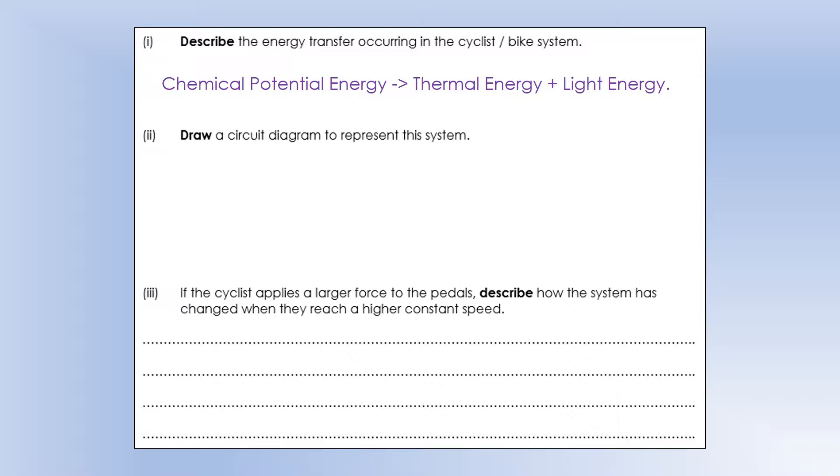So we can represent the whole system just using a circuit. Because remember, a cell provides chemical potential energy, and a resistor transfers that into thermal energy, and a light bulb transfers it to light energy. So this circuit is a very nice analogy for a cyclist.